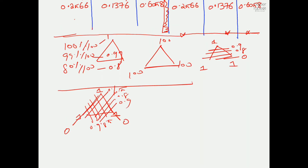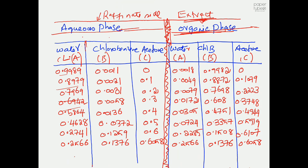Coming back to the liquid-liquid equilibrium data: the aqueous phase (carrier liquid, A = water) has a high mass fraction of A compared to the other components — that is one easy way to identify the raffinate side. The aqueous phase is your raffinate, and whatever is in the solvent at the end is your extract, since we used the solvent to extract the solute.